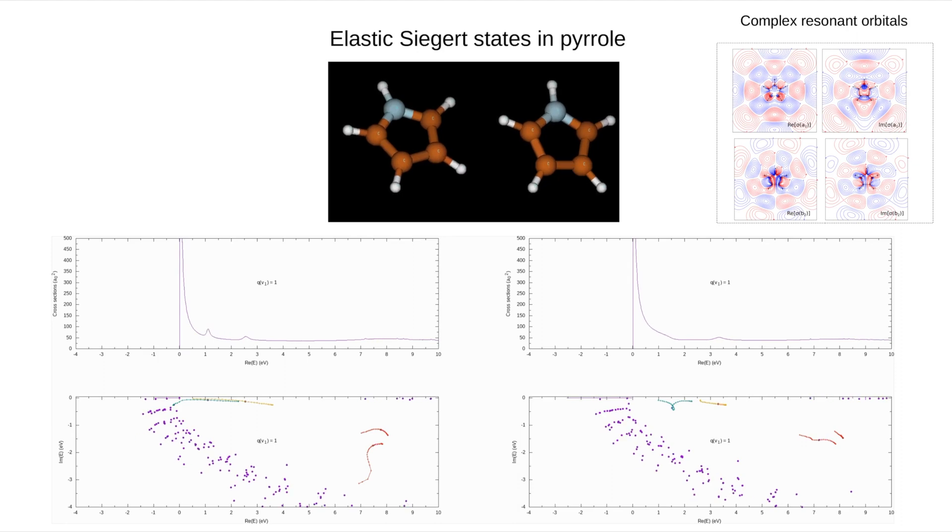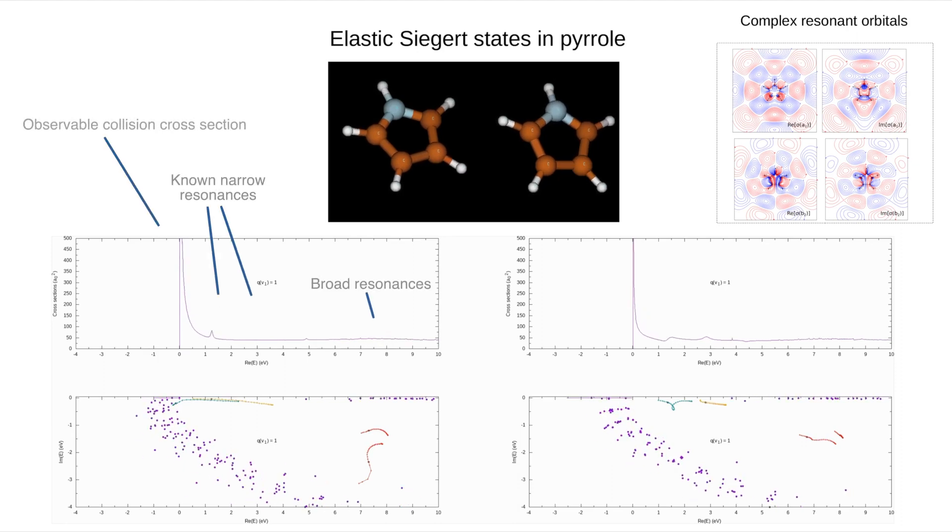We have recently developed the tools to calculate all resonances in the complex plane. This allows us to look at them directly and to analyze all the peaks in the cross-section in detail. But many types of resonances remain unexplored.